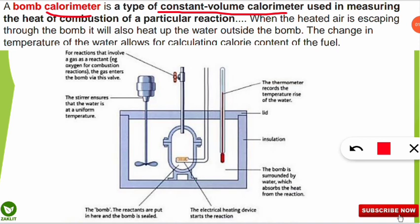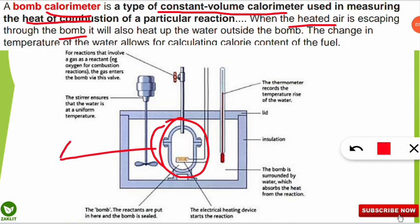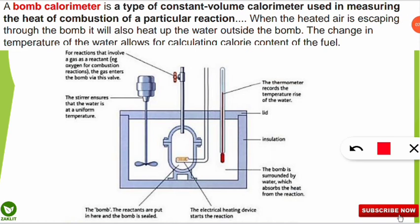The bomb calorimeter is used for measuring the heat of combustion. The key question is how it calculates energy. The bomb — a strong steel vessel — is the core component, also called the bomb cell. Inside, a sample is placed in either powder or gas form. If the sample is gaseous, it is inserted through a valve. If it is a solid, it goes through the main chamber.